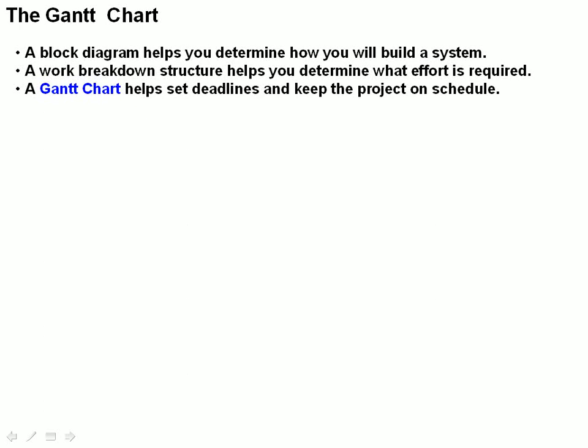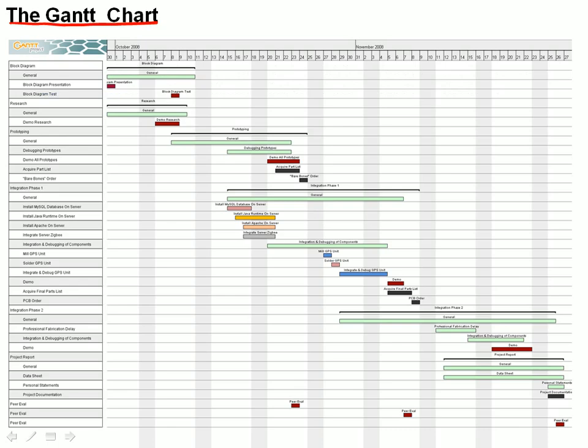While the block diagram helps you determine how you're going to build the system, the work breakdown structure determines the effort required. The Gantt chart is the tool that most people use to set deadlines and keep the project on schedule, to actually manage your time, the most valuable of resources.